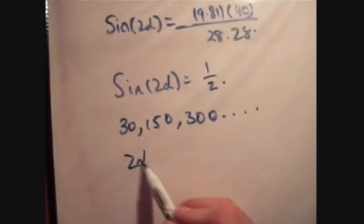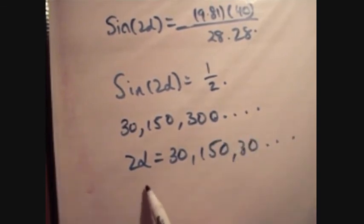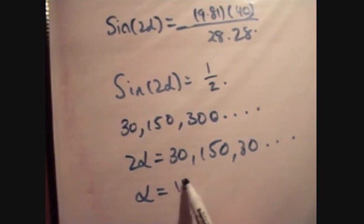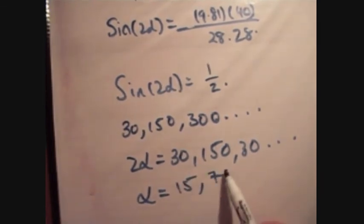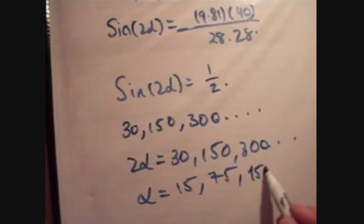So that means that 2 alpha must be equal to 30, 150, 300, and so on. Alpha is equal to 15, 75, 300, so that would be 150. Like so.